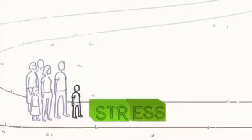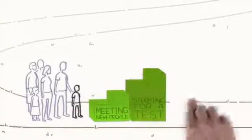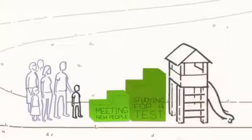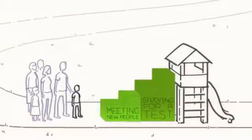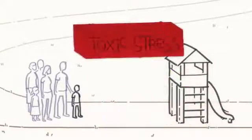Good kinds of stress, like meeting new people or studying for a test, are healthy for development because they prepare kids to cope with future challenges. Another kind of stress, called toxic stress, is bad for brain development.